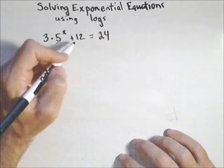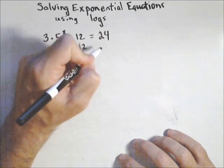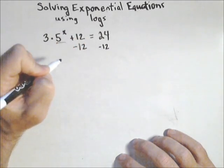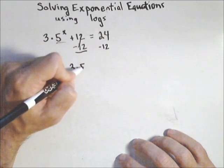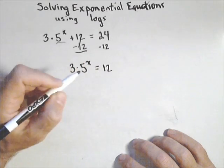So we'll solve this just like any equation. We'll start off by subtracting 12 off of each side. So those will cancel here. We get three times five to the x equals 12.